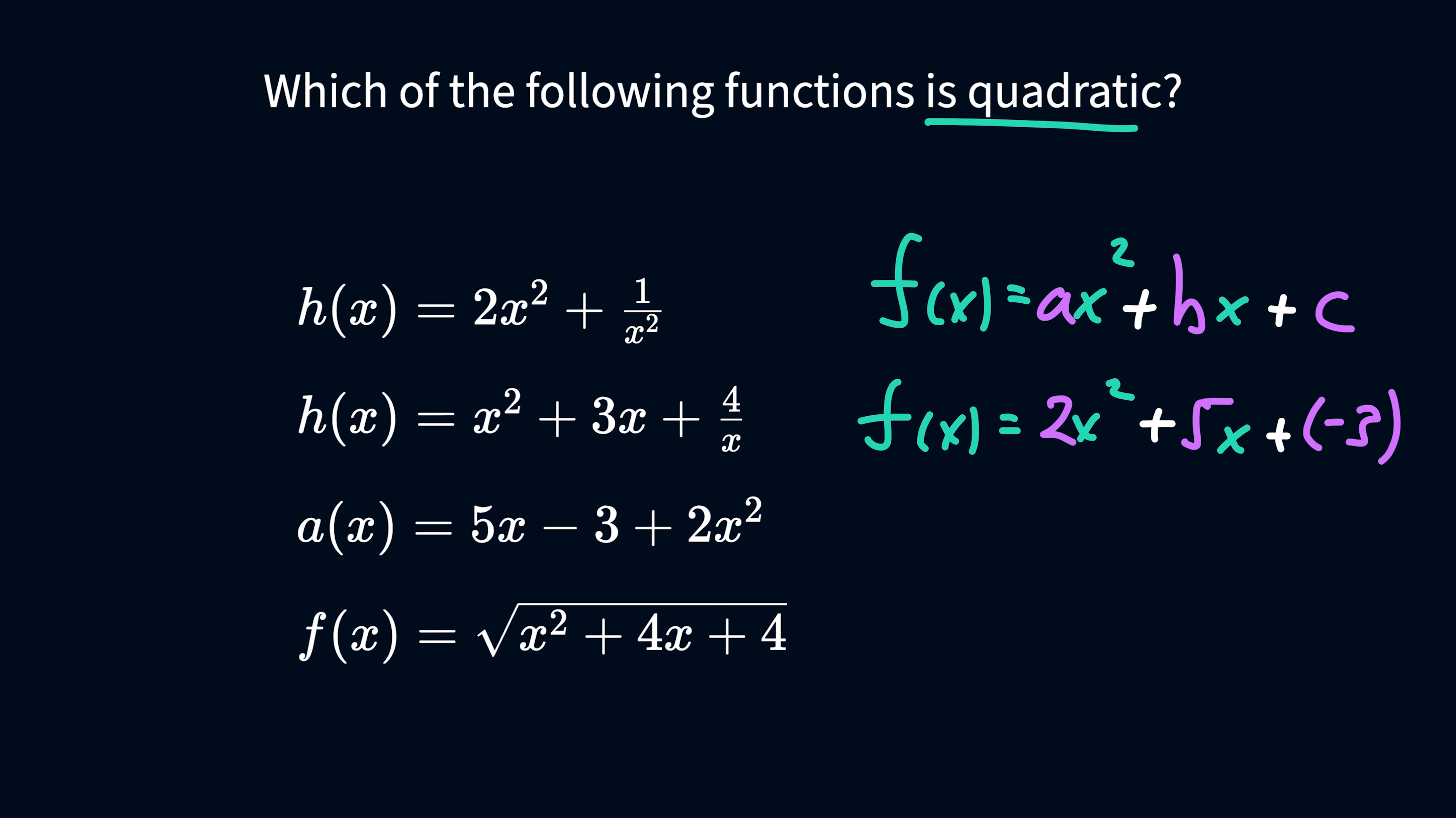So just keep that in mind, that even though we have a quadratic here, this is kind of subtle, that since it's under the square root, it is not a quadratic function. It's the square root of a quadratic function, which is no longer a quadratic function. So the answer to this is going to be 5x minus 3 plus 2x squared. Thanks so much for tuning in. I really hope you like this challenging problem.